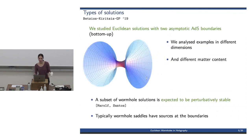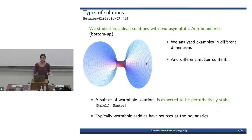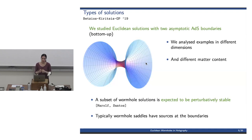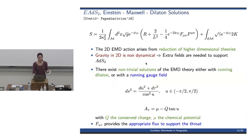Now let me continue with the bulk perspective. The solutions we first studied were Euclidean solutions with two asymptotic AdS regions. These are bottom-up solutions and we analyzed various examples in different dimensions with different matter content. A subset of such wormhole saddles is expected to be perturbatively stable. Another comment is that this type of wormhole saddle has sources at the boundaries — for example, a scalar field that diverges.